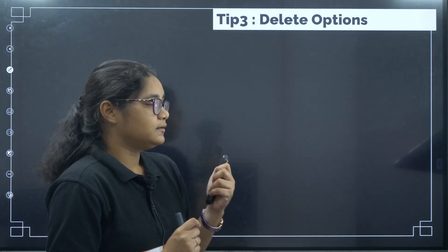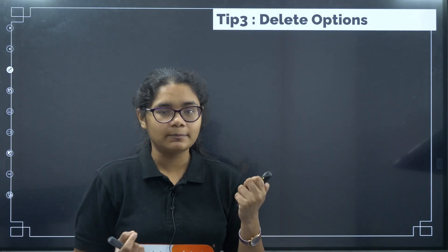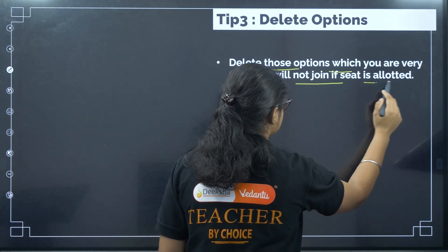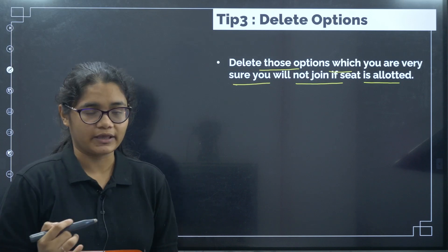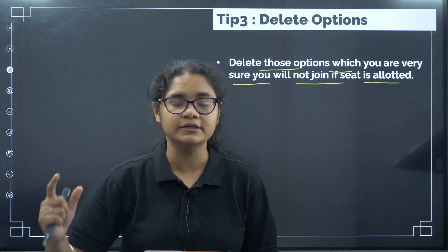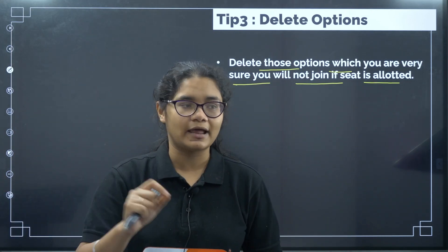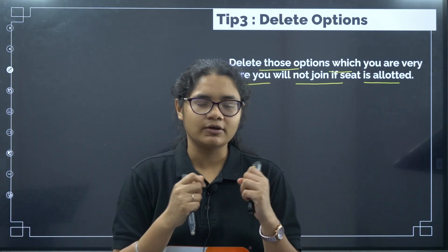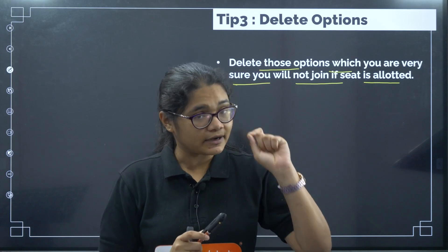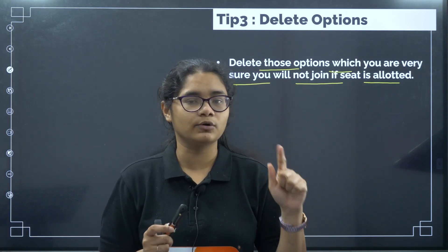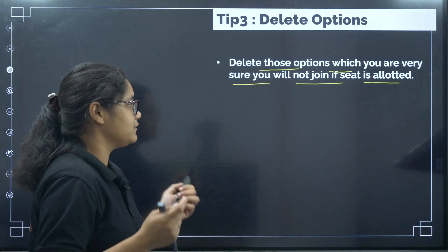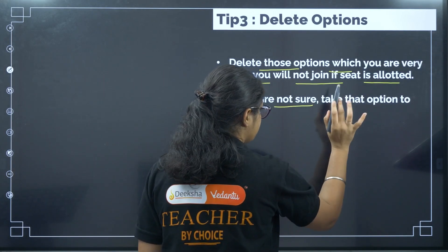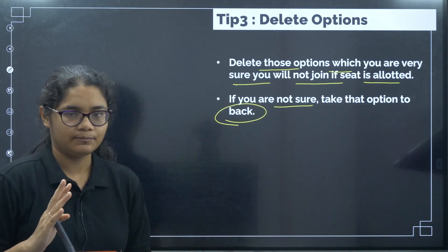The third tip is to delete options. Delete only those options which you are 100% sure you will not join if the seat is allotted — whether due to fees, location, or any other reason. However, if you are unsure whether you will join or not, do not delete it; instead, move that option to the back of your list.